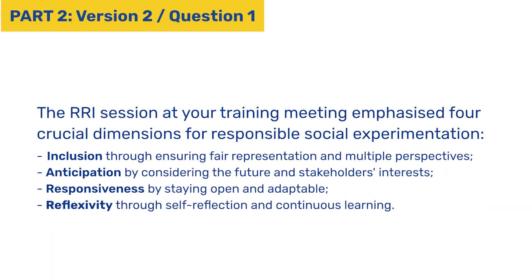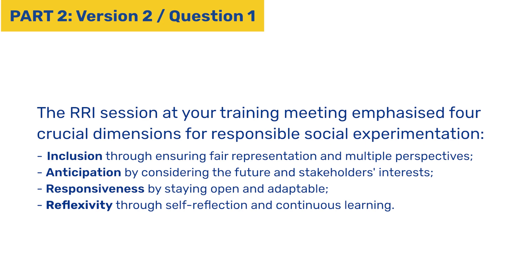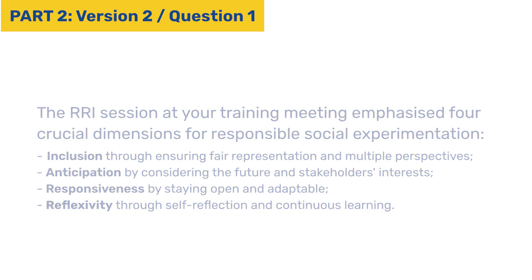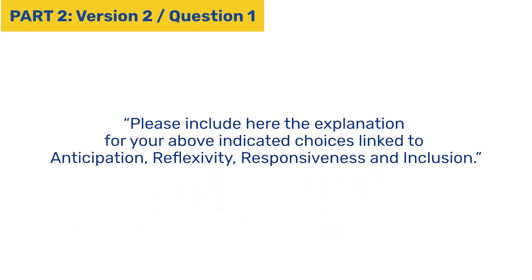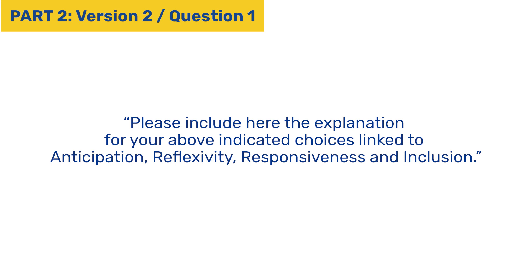Moving on to version two — the first question in version two of part two of the monthly surveys is all about responsible research and innovation. This was introduced at your training event and there are four dimensions that we're asking you to reflect on. After the tick box questions, we now have an additional open text question we'd really like completed for the remainder of the experiment, and we would really appreciate if you can take the time to do this.